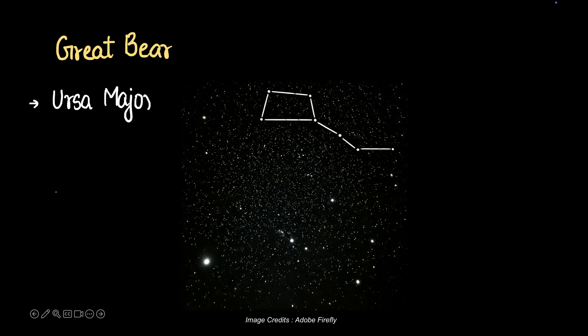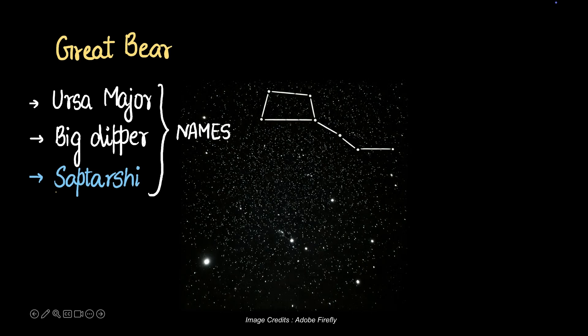It's also called the Ursa Major or the Big Dipper, or in India it's called the Saptarishi. All these are just names for the same constellation. If you're wondering how the name Saptarishi came, this has seven stars and we know that in Sanskrit Saptar is basically seven. So that's where that name came from.